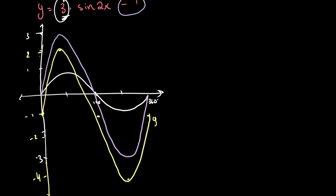This right here is y is equal to 3 times sine of x minus 1. Now we want to account for the 2x. What 2x does is it changes the period. Our original period is 360 degrees, so our new period is equal to 360 over 2, which is equal to 180 degrees.